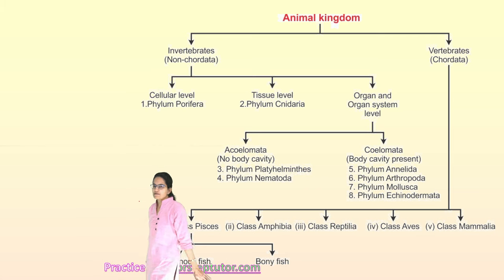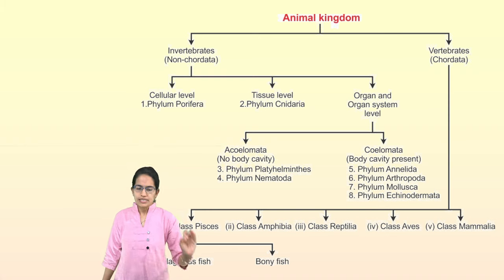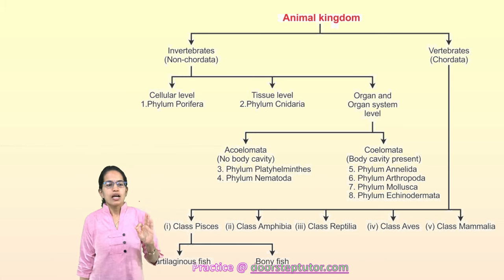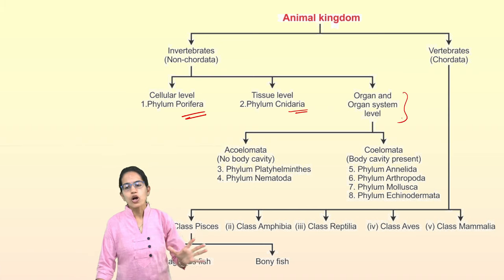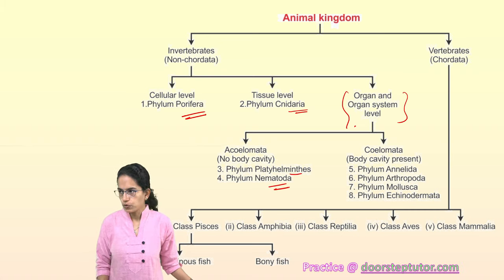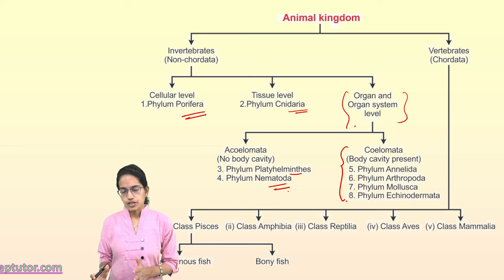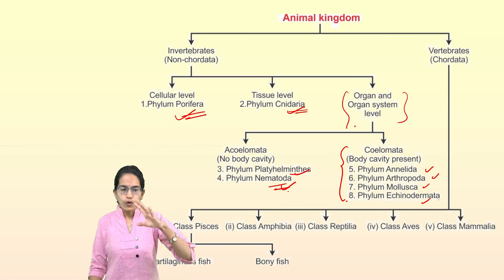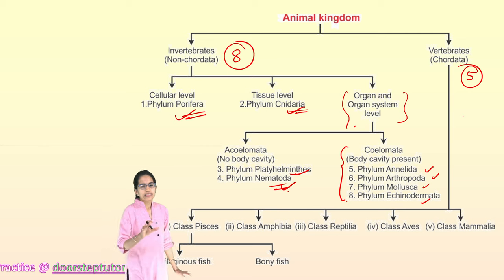Animal kingdom can be classified into Chordata and Non-chordata. Non-chordata has eight classifications and Chordata has five. The first non-chordate group is Porifera — pore-bearing, sessile organisms. A good example is sponges. The skeleton is made of spicules or spongin fiber. The body has pores known as ostia. Water enters the hollow space called the spongocoel and exits through the osculum. This is the process through which respiration, food intake, and excretion of carbon dioxide and waste products take place.